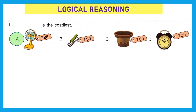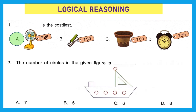Question 2: the number of circles in the given figure. We have to count how many circles are there in this diagram. Let's count: 1 on the top and 4 at the bottom, so total 5. Our correct answer is option B, 5.